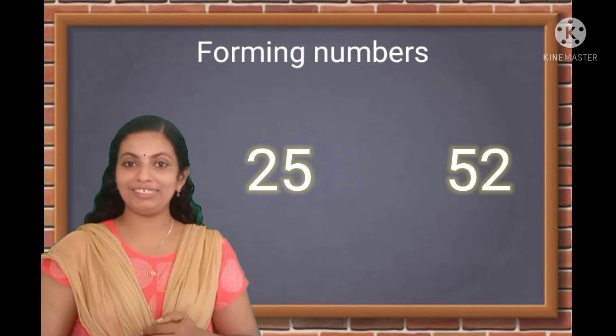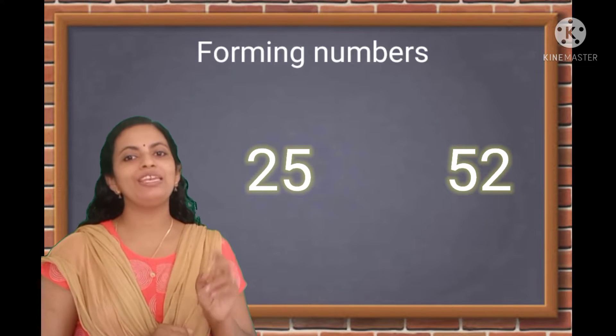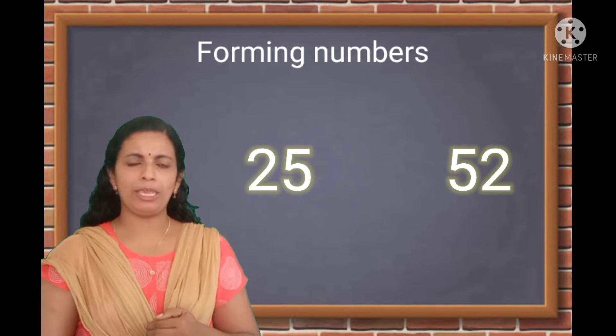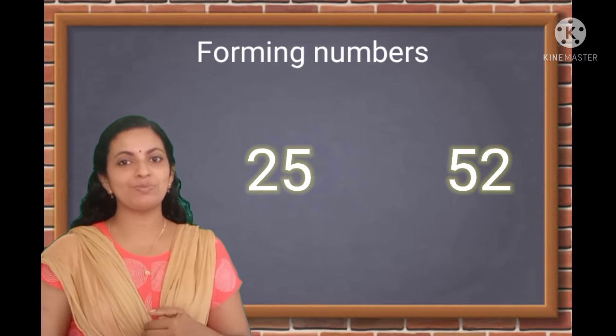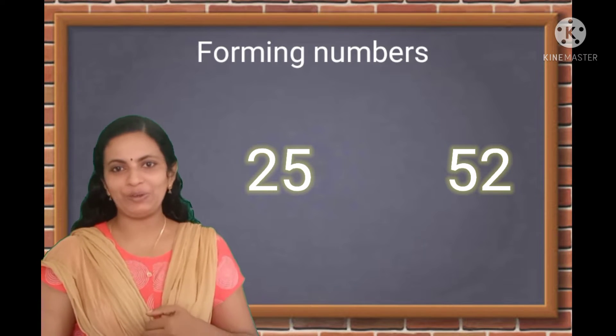Any two digits, we can make two numbers. Okay, tell me, which is the smallest number? Yes, 25.